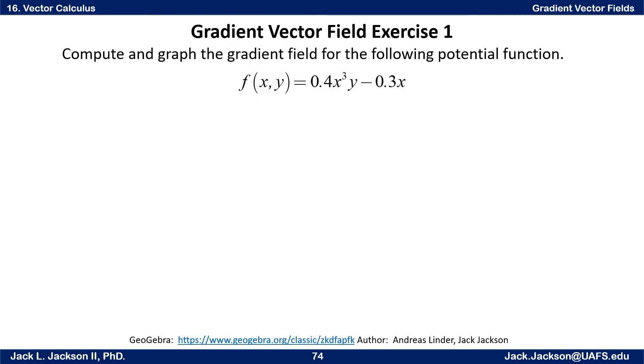So here's a problem for you. Here's a function f(x,y) = 0.4x³y - 0.3x. Find the potential function—that is the potential function—find the gradient function of that and then make a graph of it.